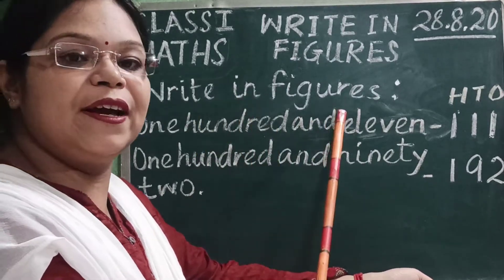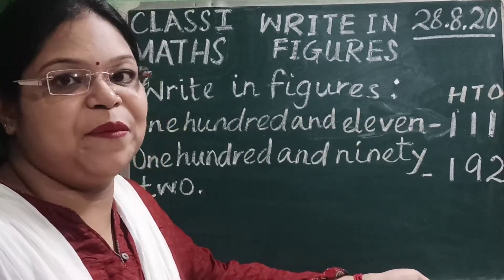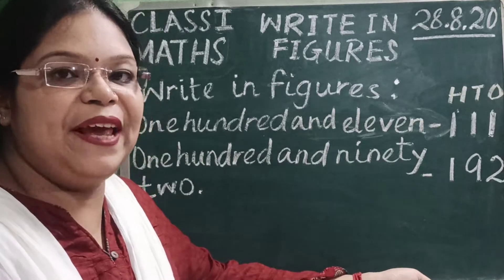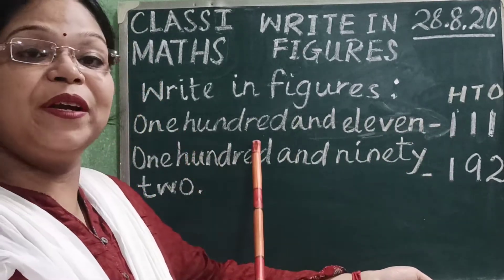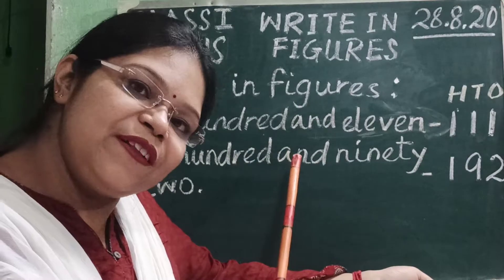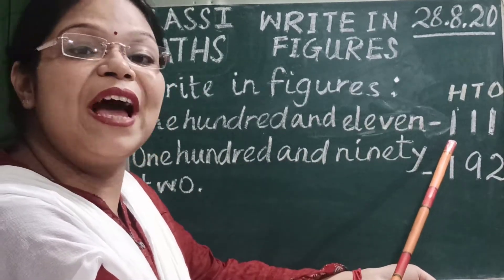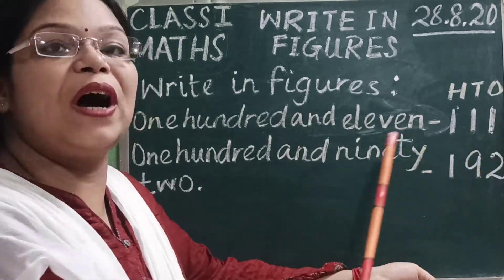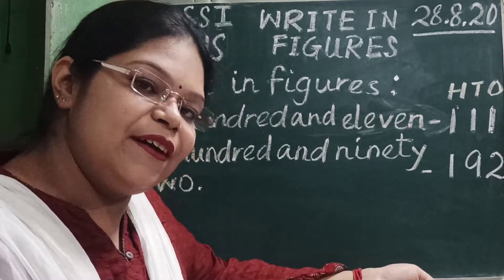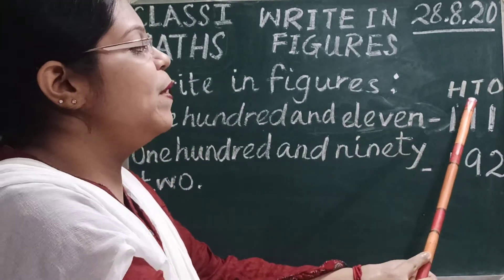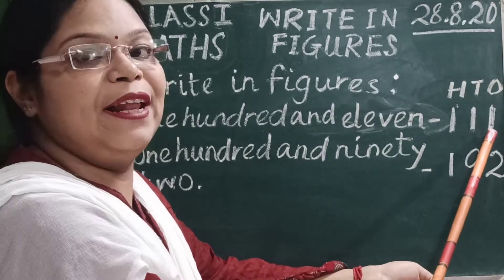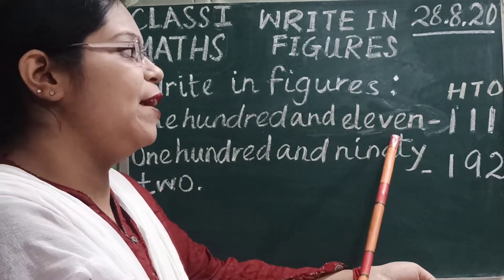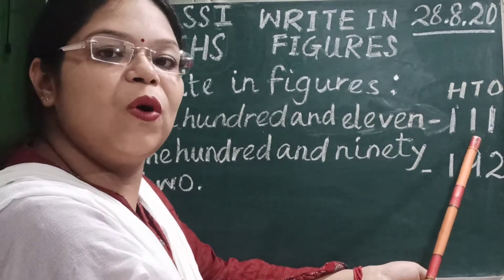Write in figures. Let us see the first number. 100 means the digit in the 100's place is 1. So children, we have written 1 under the 100's place. And the digit in 10's and 1's place we will read together, so it is 11. So we have written 11 under the 10's and 1's house. So 111 in figures it will be 111.